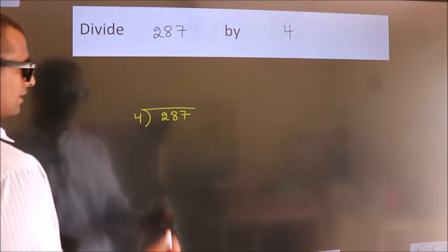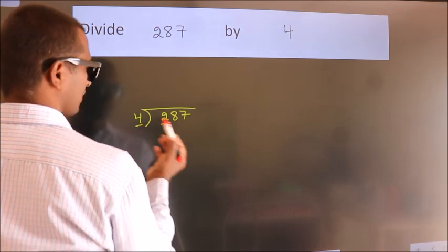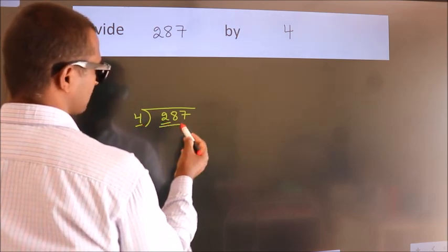Next, here we have 2. Here 4. 2 is smaller than 4, so we should take 2 numbers: 28.